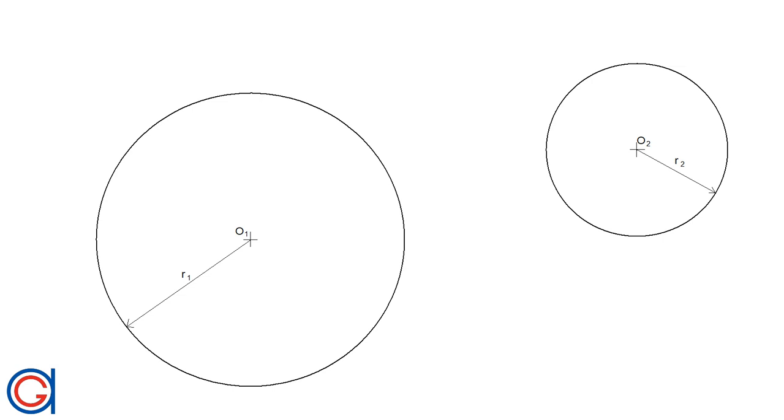Here you can see the two given circles with center points O1 and radius R1, and with center point O2 and radius R2.